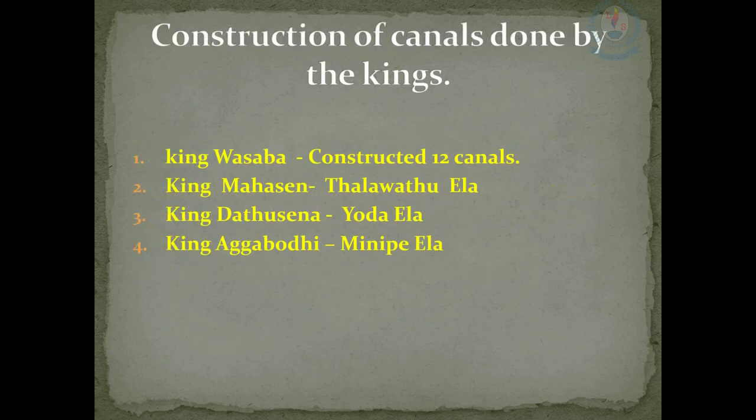Now we are going to focus on some canals constructed by some kings. King Mahasen constructed 12 canals. King Dhatusena constructed 11 canals. King Aggabodhi constructed the Minipe canal.